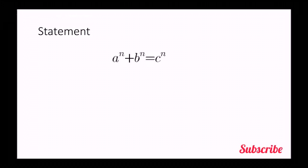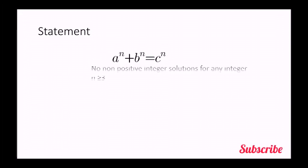It states that the expression a to the n plus b to the n equals c to the n has no positive integer solutions for a, b, c and for any integer n greater than or equal to 3.